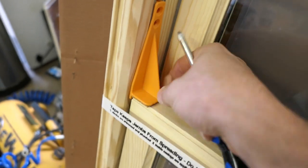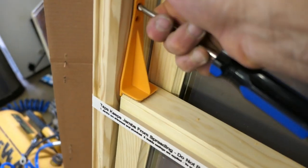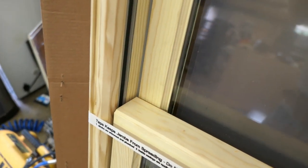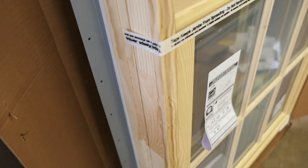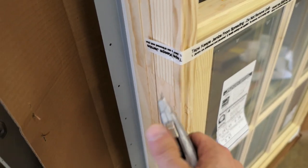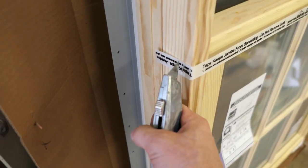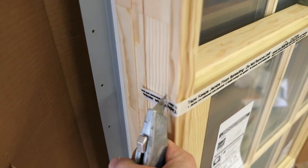First thing you want to do is take the shipping lock out. There's one on either side. This little strap you'll cut with a knife. It just prevents the jams from spreading apart.